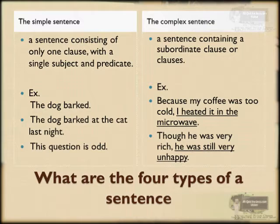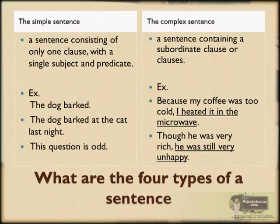The complex sentence: a sentence containing a subordinate clause. Example: 'Because my coffee was too cold, I heat it in the microwave.' So he was very rich, he was still very unhappy. What are the four types of a sentence?